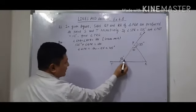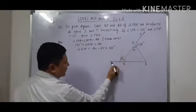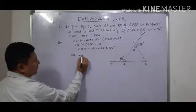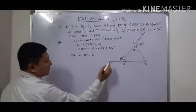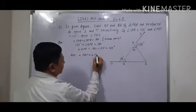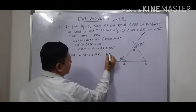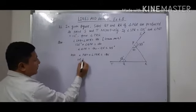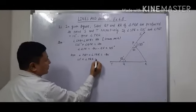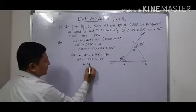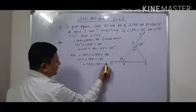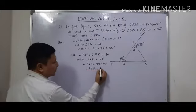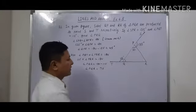Now these two angles are also a linear pair: angle PQT and angle PQR. So angle PQT plus angle PQR is equal to 180 degrees, again by the linear pair property. Angle PQT is 110 degrees, so angle PQR is equal to 180 minus 110, which is 70 degrees.